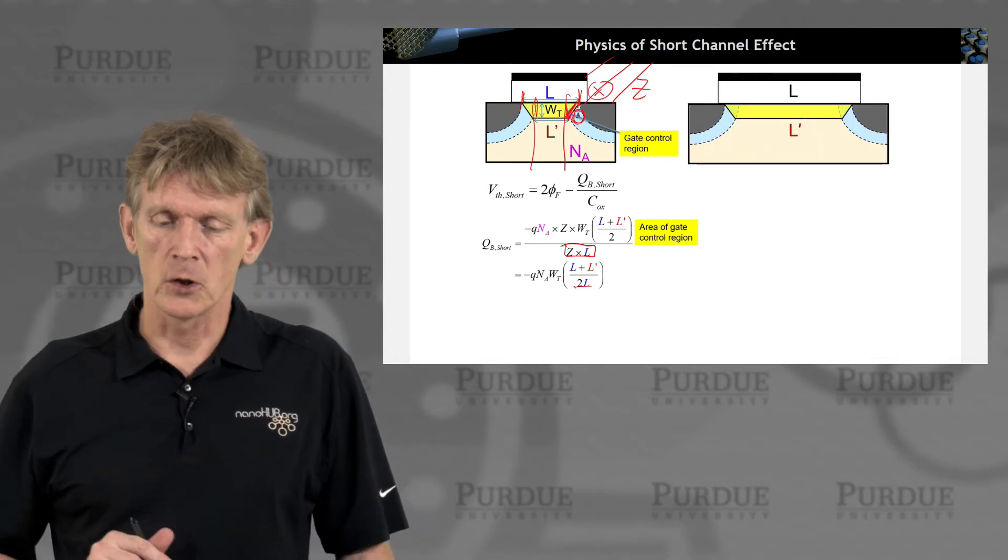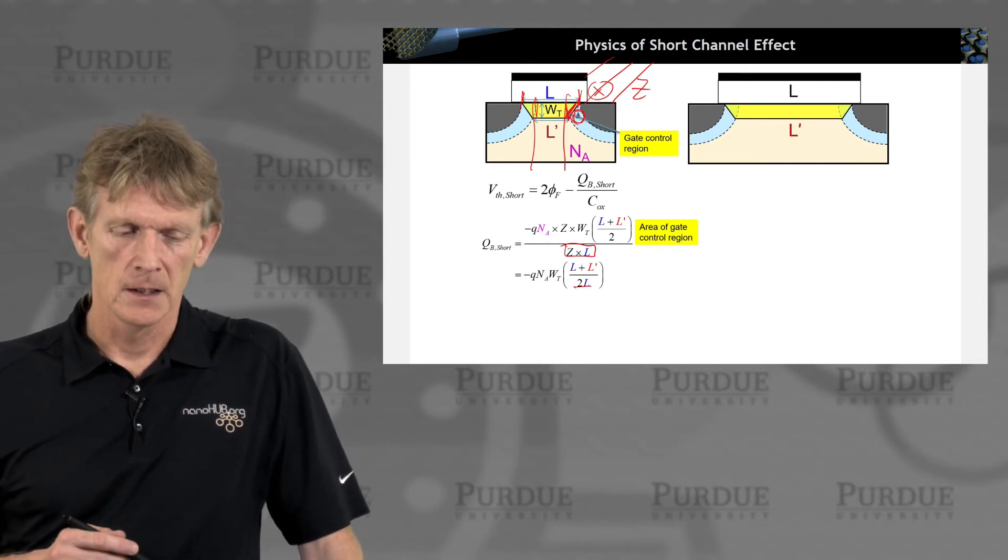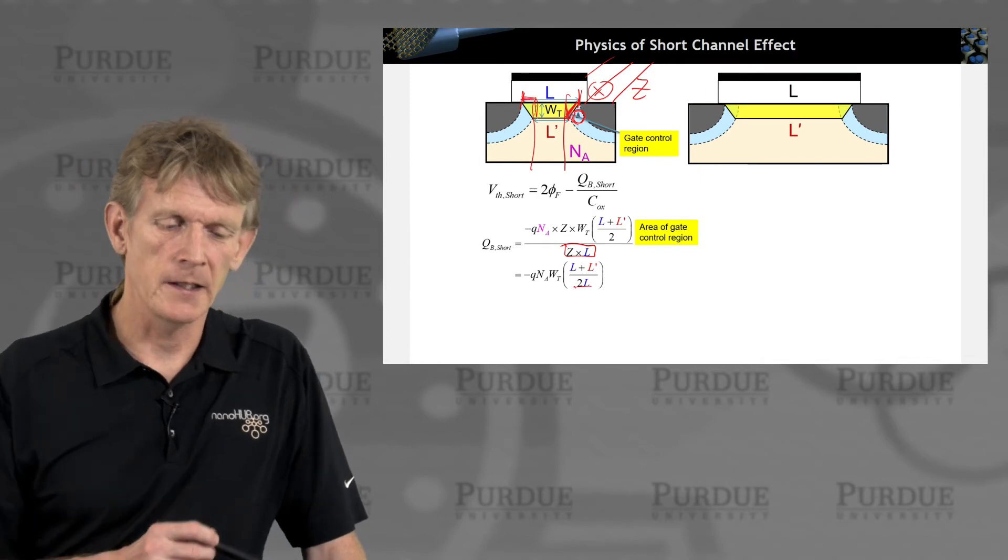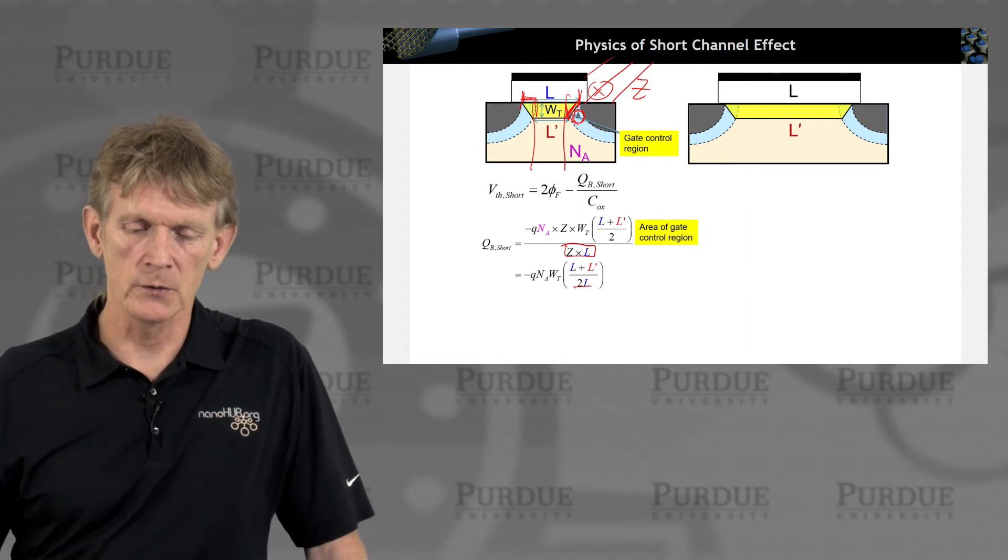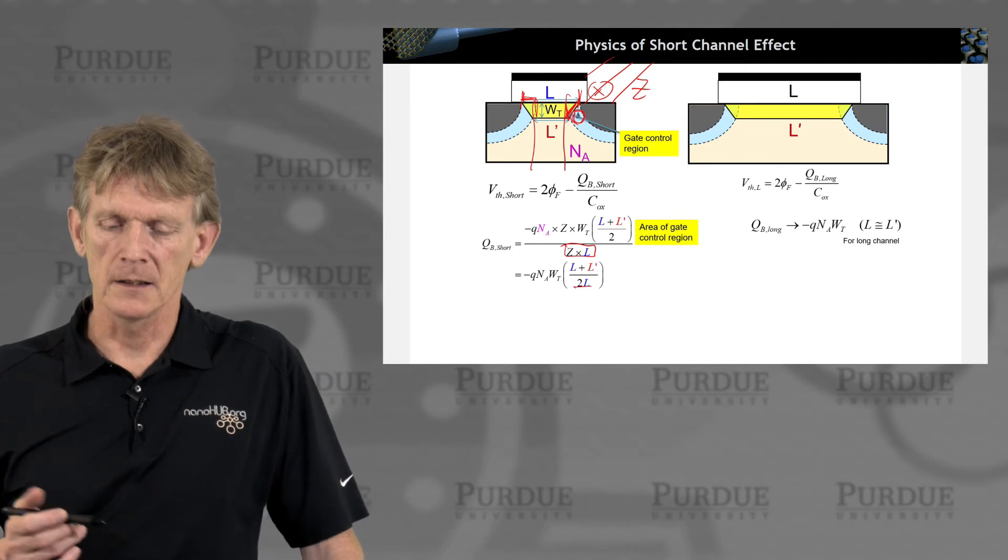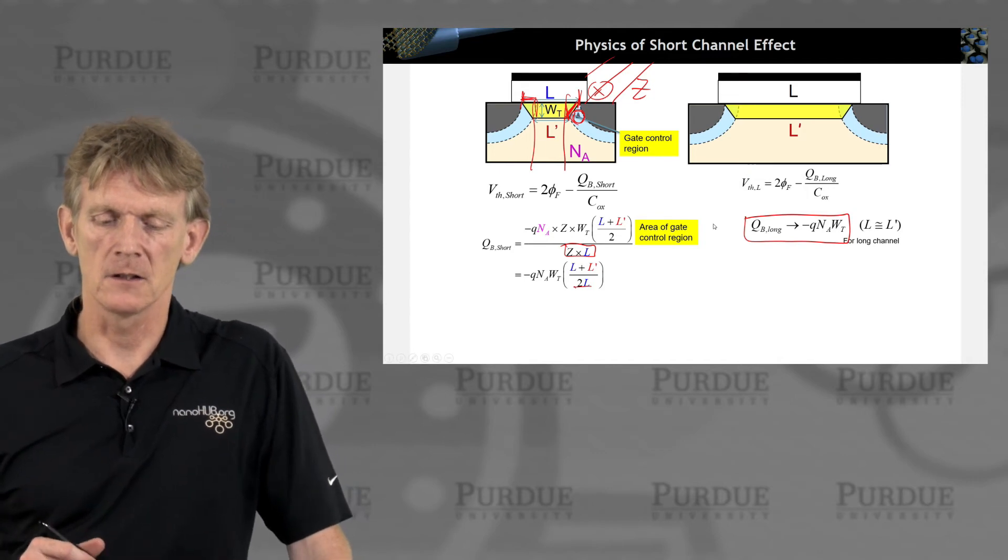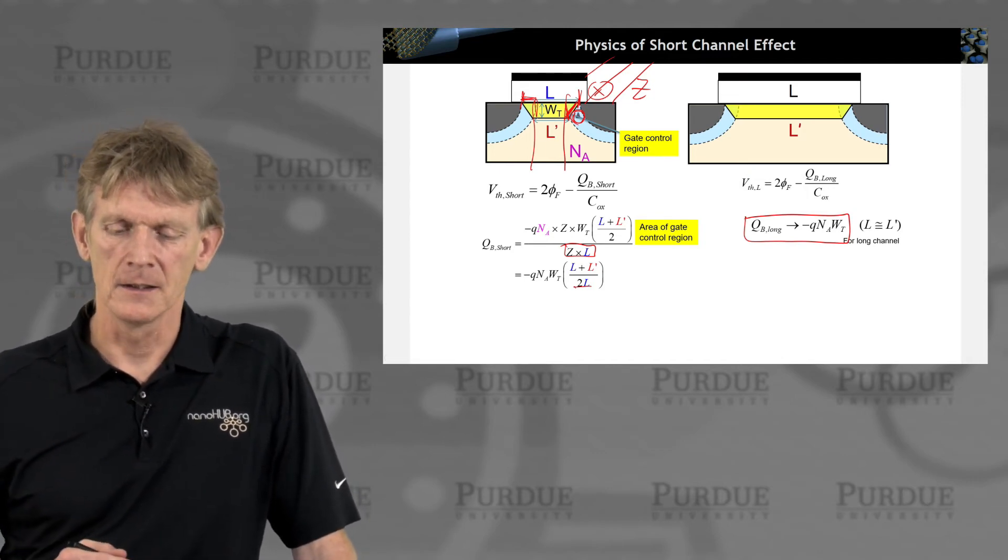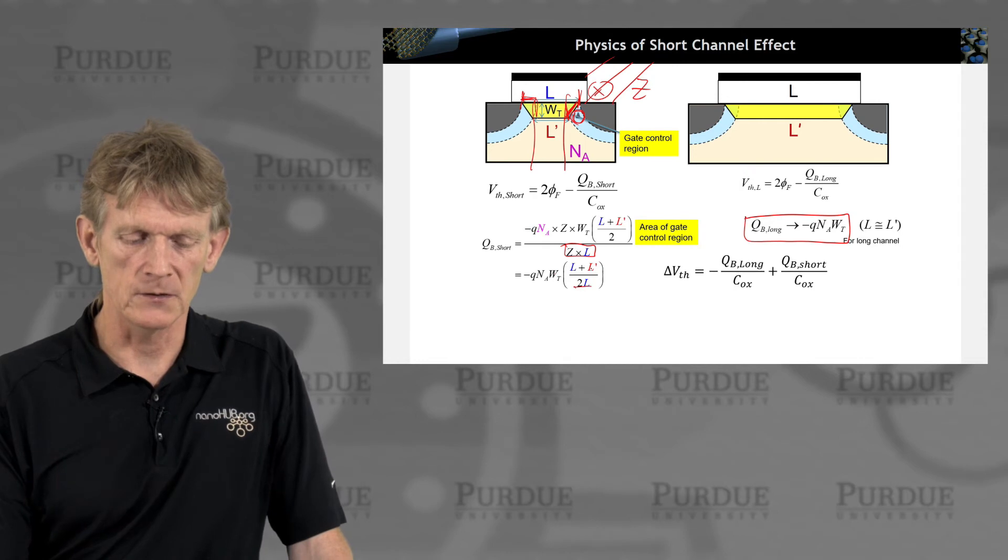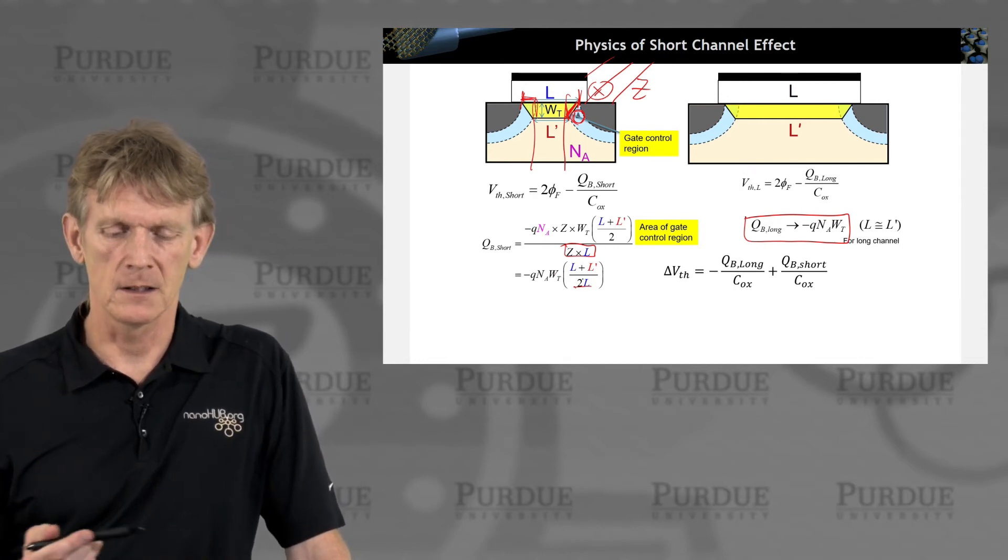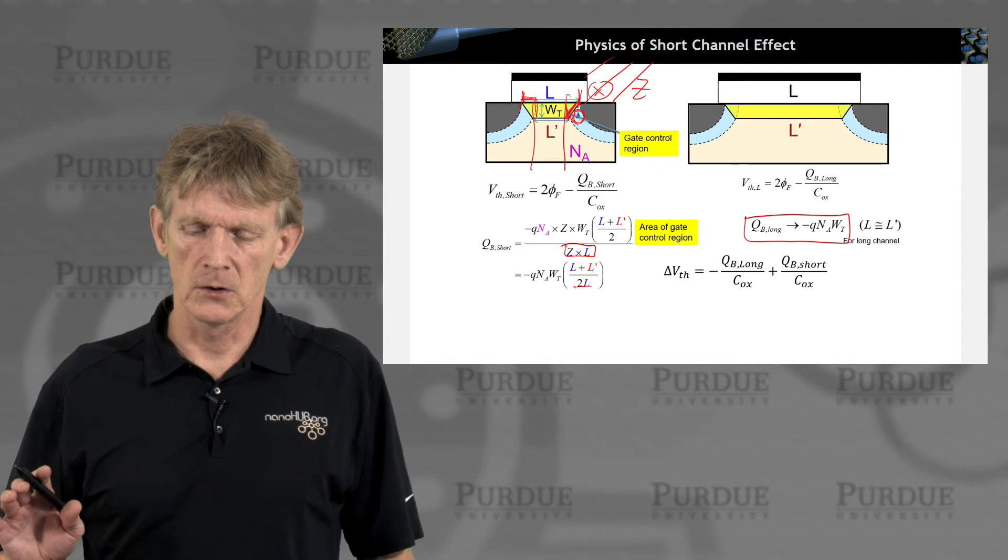For a long channel device, L and L prime are close to each other. Here, the difference between L and L prime is becoming an important key element in the electrostatics. In the limit of a long channel where L and L prime are about the same, then you get an expression we had before, that the charge in the long channel is just the thickness of the channel times the doping times charge. If L and L prime are about the same, you cancel the Ls, and you get the same expression for this limit.